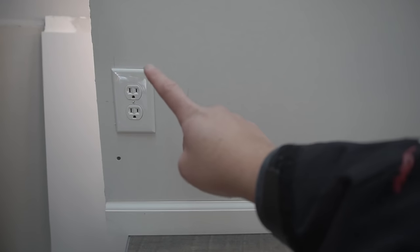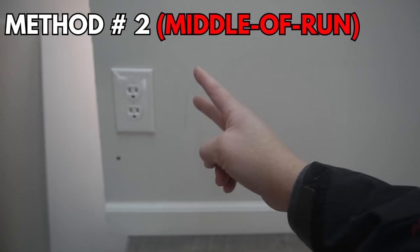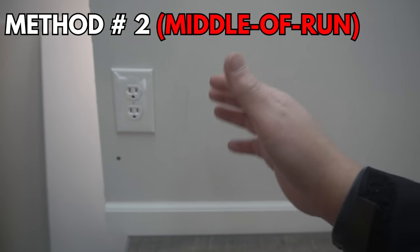So there you have it. There's our first method, wiring an end of run receptacle. Now let's get to the second method, which is wiring a middle of run receptacle, meaning there's two wires coming through.